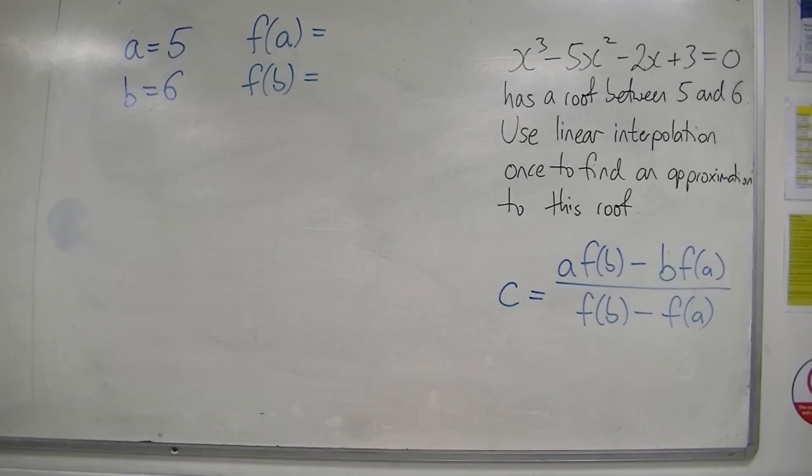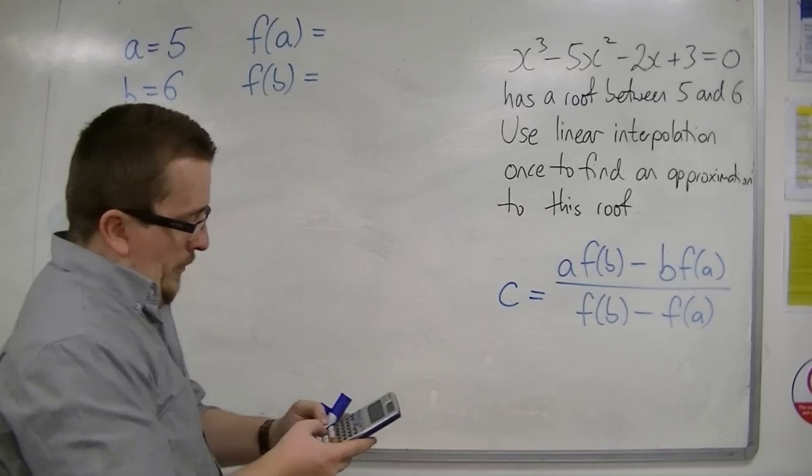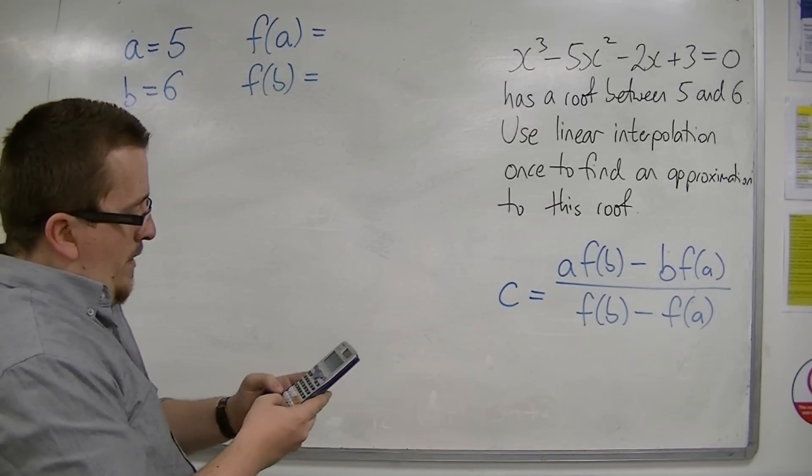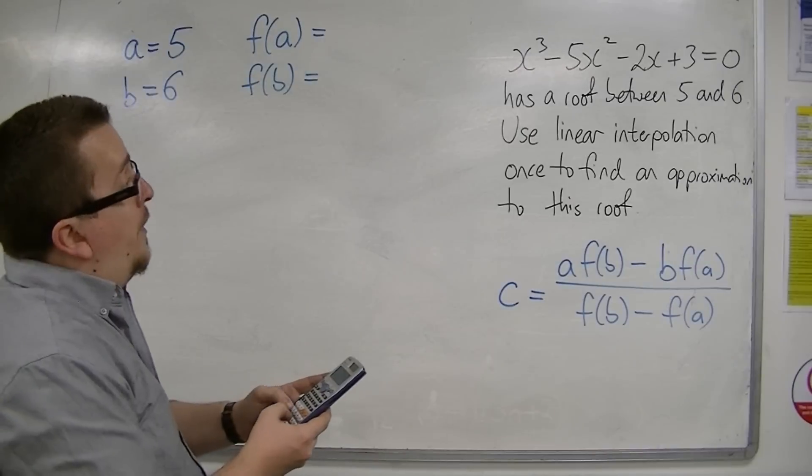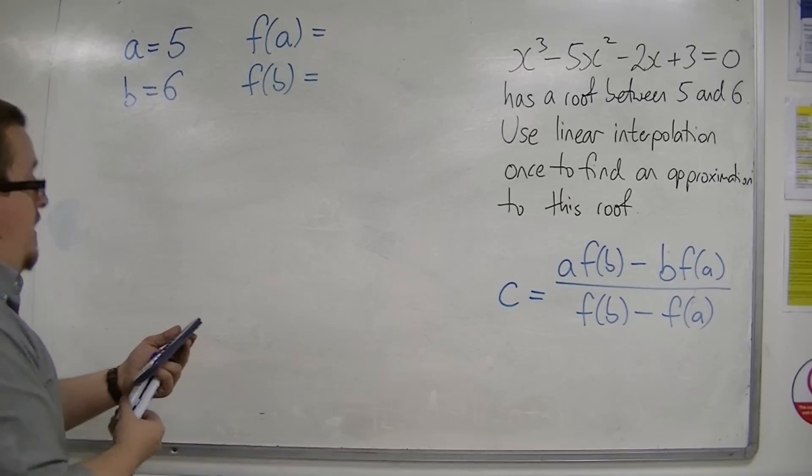Can't remember those off the top of my head. So substituting in 5, so 5 cubed take away 5 times 5 squared take away 2 times 5 plus 3 is equal to minus 7.